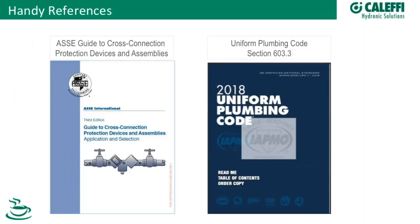Some of the text we'll be referring to would be from ASSE's guide to devices and assemblies, which illustrates your application and selection. Then uniform plumbing code — certain states have their own code, and there is international plumbing code. Wisconsin has their own state code. I've talked to folks around the country who have adopted the uniform plumbing code but still have added text — what we'd call Wisconsinisms — where the Wisconsin code supersedes the uniform plumbing code and takes it to a higher level.